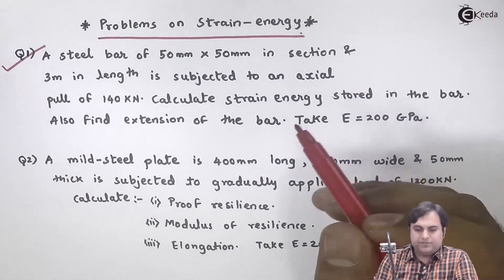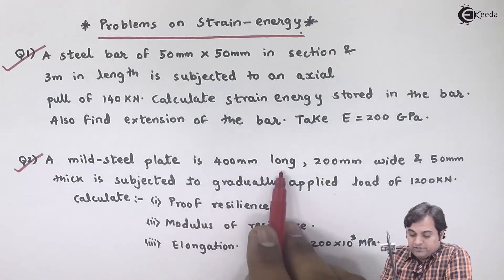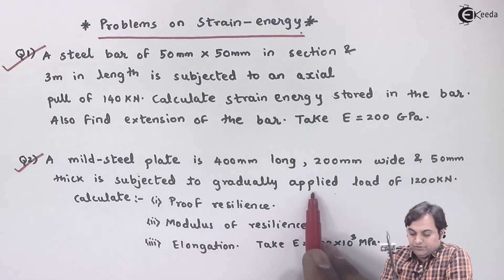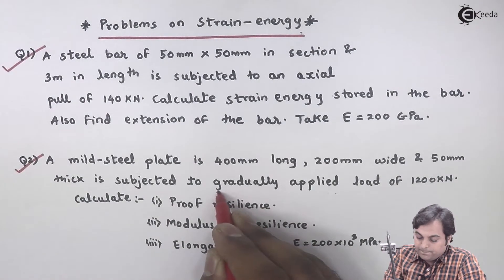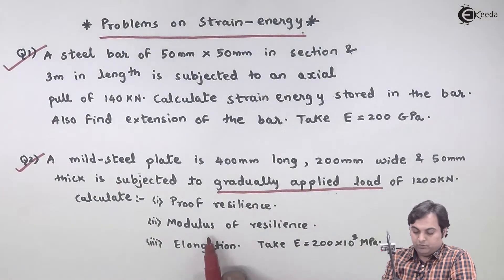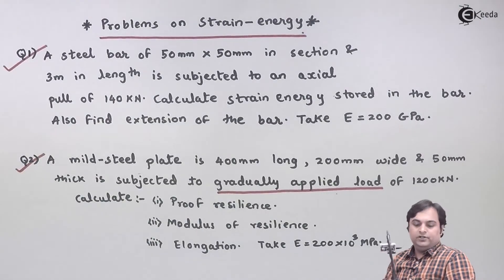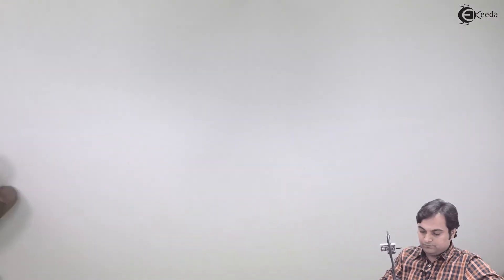Let us take the second question. A mild steel plate is 400 mm long, 200 mm wide, and 50 mm thick. It is subjected to a gradually applied load of 1200 kN. Calculate proof resilience, modulus of resilience, and elongation. Young's modulus E is equal to 200 × 10³ N/mm².